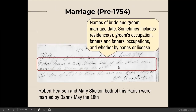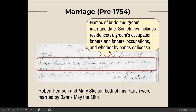Now let's look at some marriages. Marriages recorded without printed forms would normally include the name of the bride and groom and the marriage date. These free-text marriage entries could also include residences of both bride and groom, the groom's occupation, and occasionally the woman's occupation. They could list the fathers' names and occupations, and whether the marriage took place by banns or by license. In this one we see that Robert Pearson and Mary Skelton, both of this parish, were married by banns on May the 18th.